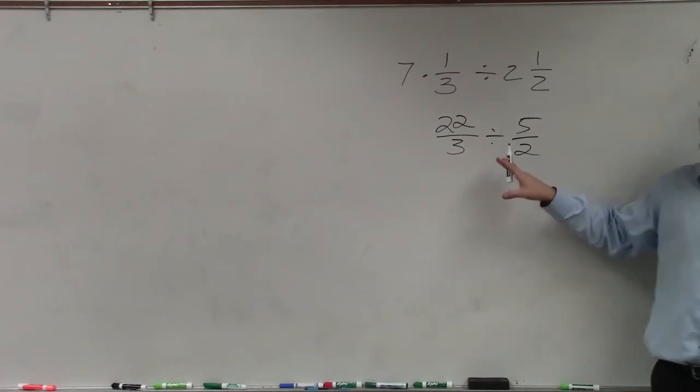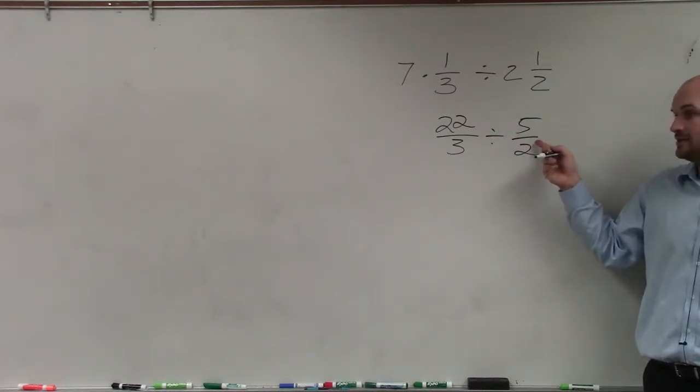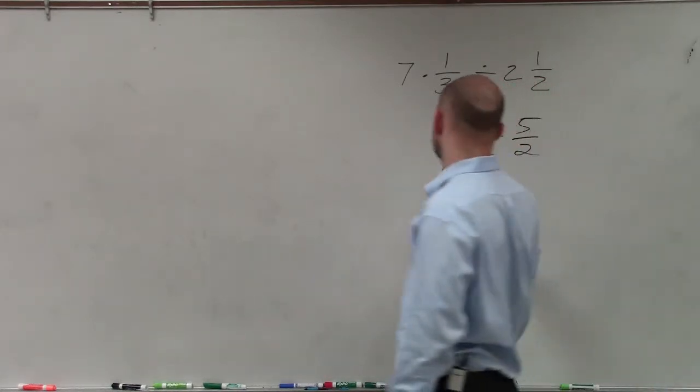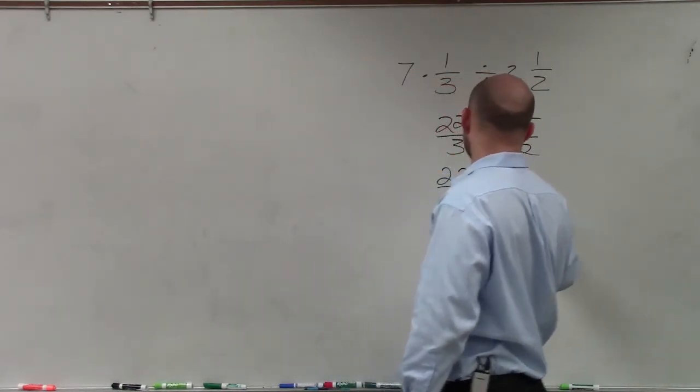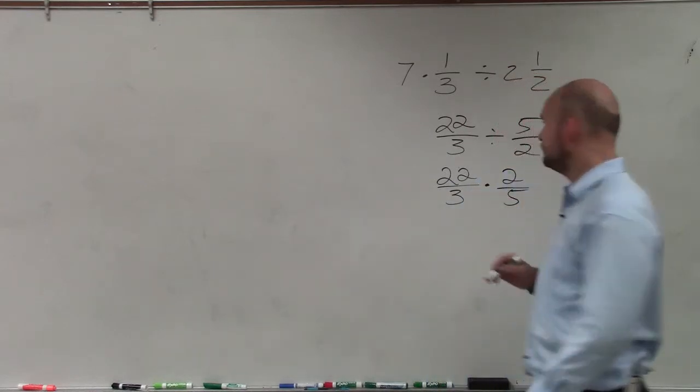Now, to dividing, what we're simply going to do is replace this into a multiplication problem by taking the reciprocal of our divisor, which is 5 halves. So I do 22 over 3 times 2 fifths.